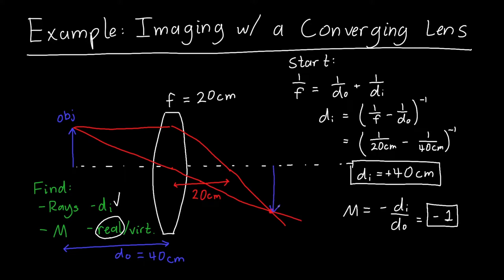And so if I draw my image from the optical axis down, I see, yep, it looks to be at a distance of about 40 centimeters. So what I was expecting to see, and it's inverted, as I'm expecting, because my magnification is negative one, and it looks about the same size as my object.